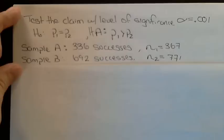From the two different samples, we have 336 successes out of a total sample size of 367. And from the second sample, there are 692 successes out of a total sample size of 771.